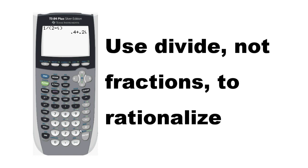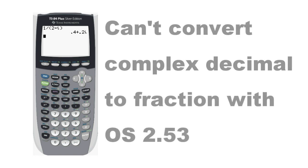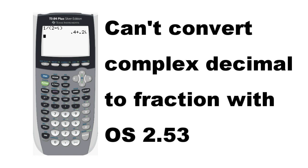In this case, 1 over 2 minus i is rationalized. If you're using an older version of the 84 OS, at this point you can go into the math menu and convert back to a fraction. This functionality appears to be broken in OS 2.53 and we hope TI will fix it in a future update.